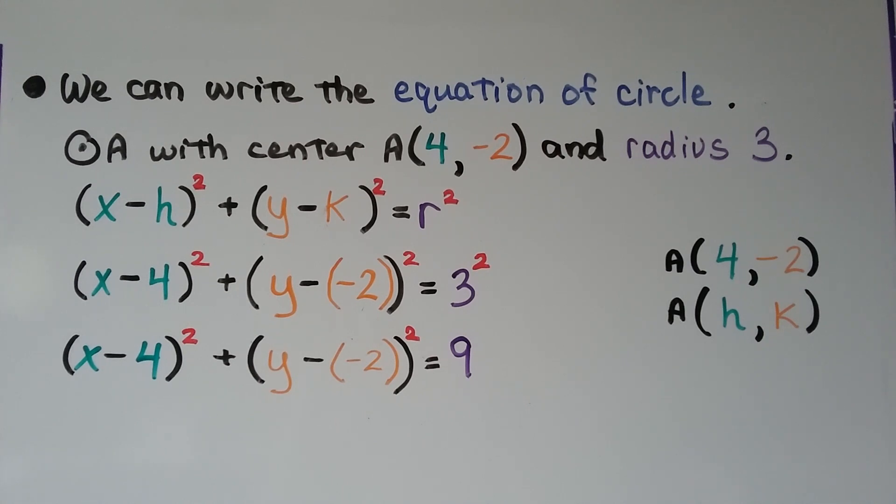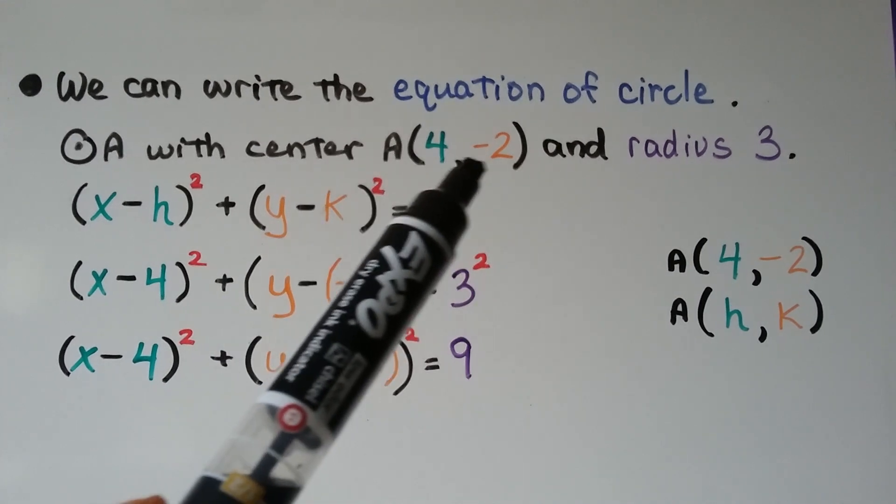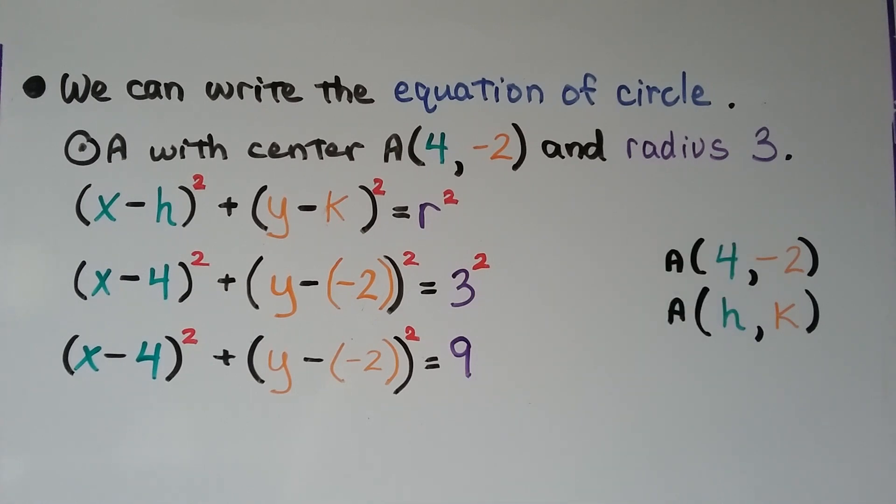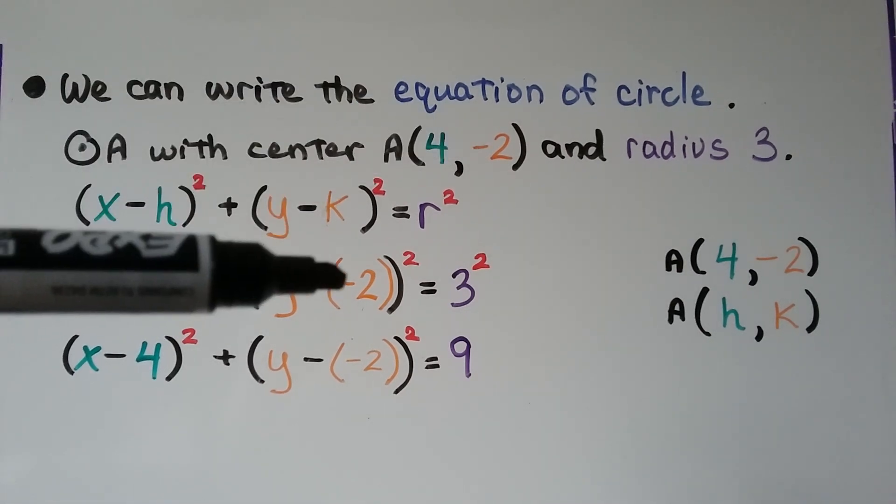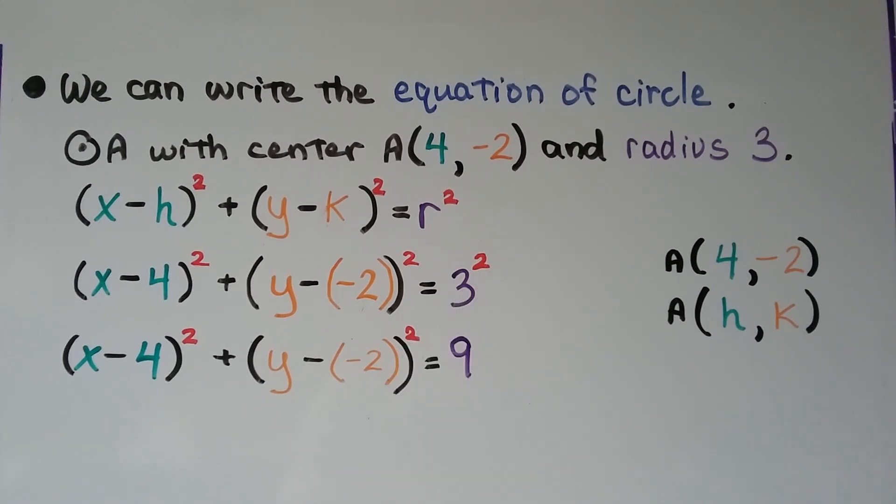We can write the equation of circle a with center a at 4, negative 2. So remember, that's the center point. That's going to be our hk. And a radius of 3. So here's that formula. We put in 4 for our h and negative 2 for our k. We know it has a radius of 3, so that's going to be 3 squared. We have x minus 4 squared plus y minus a negative 2 squared equals 9. That's the equation of circle a with center 4, negative 2, and radius 3.